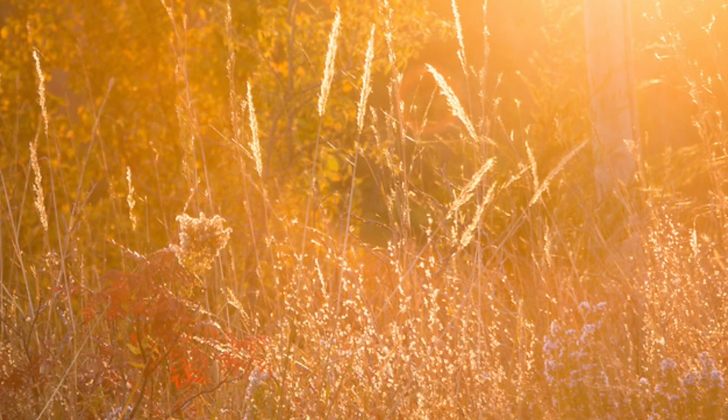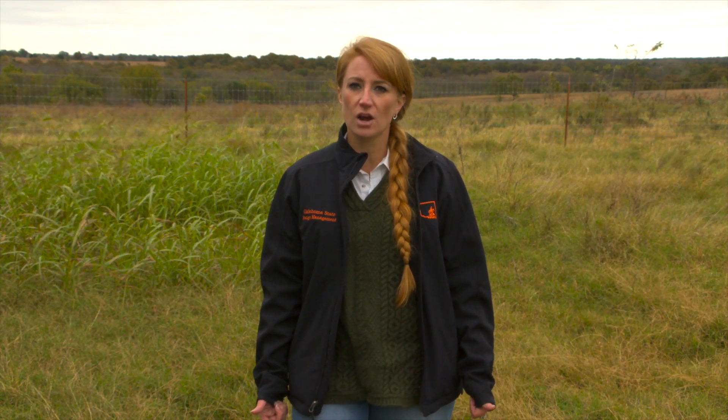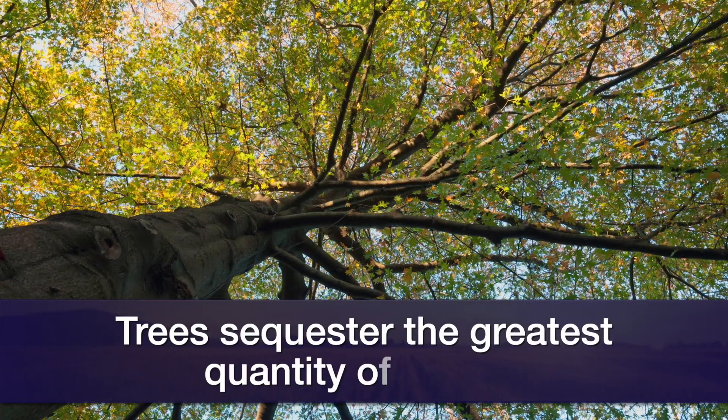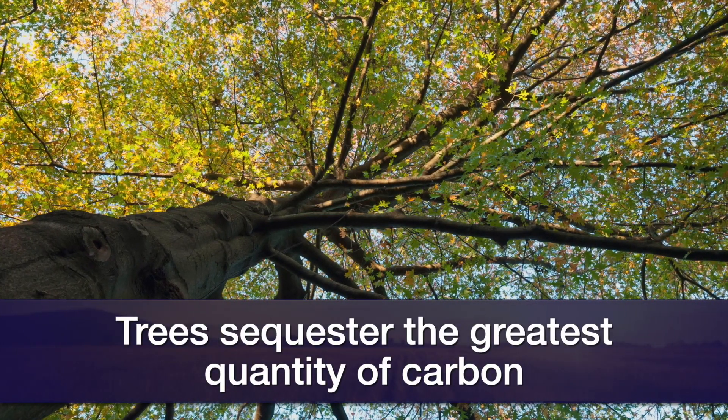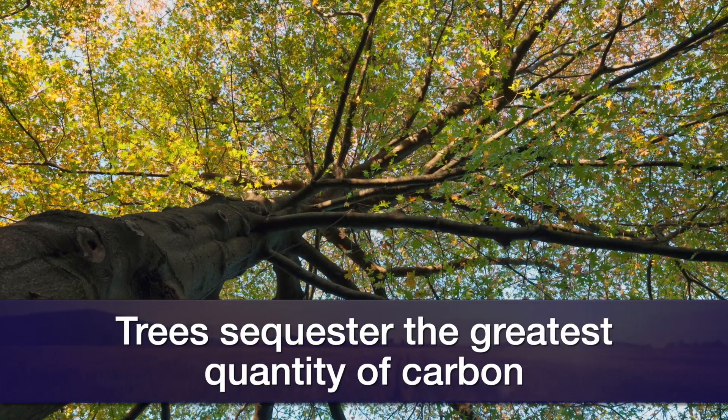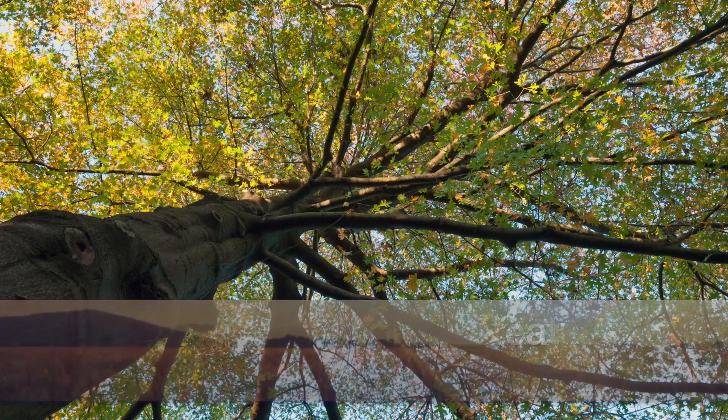Of the different plant types, trees can sequester the greatest quantity of carbon. They do this because they're holding carbon in their trunks, they use carbon to grow their branches, and the whole canopy with all their leaves also contains carbon. Because those plant parts are all above ground, that carbon is susceptible to different things like wildfire.